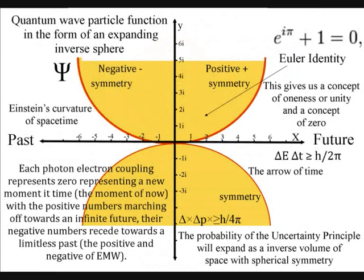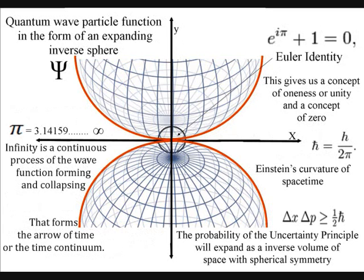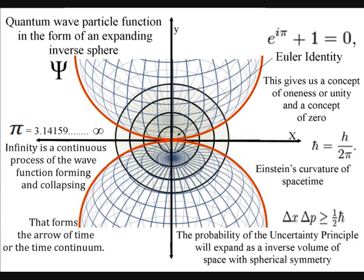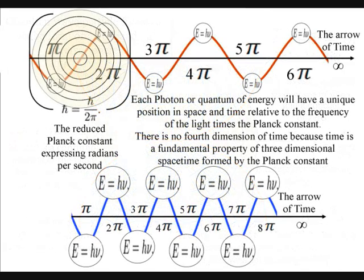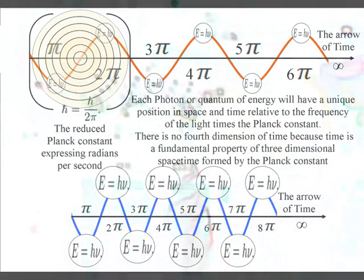Each photon-electron coupling represents zero, representing a new moment in time, the moment of now. With the positive numbers marching off towards an infinite future and the negative numbers receding towards a limitless past, the positive and negative of electromagnetic waves.